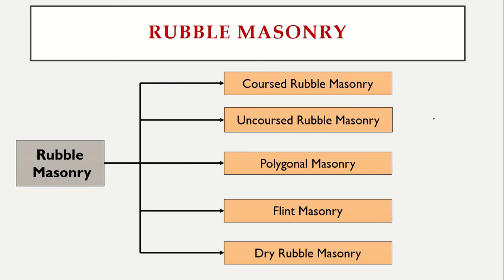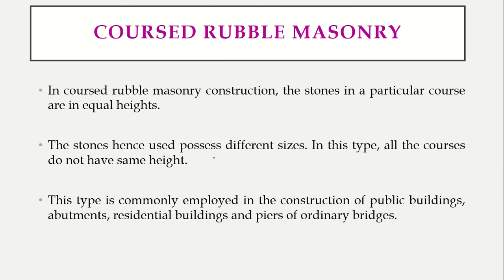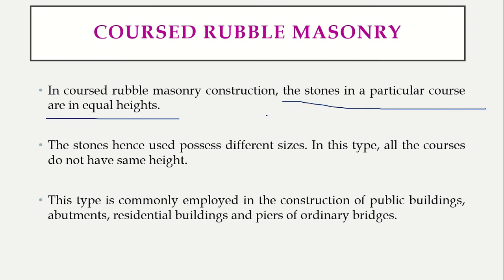Rubble masonry is further classified into five types: coursed, uncoursed, polygonal, flint, and dry rubble masonry. First is coursed rubble masonry, where the stones in a particular course are of equal heights. A course is the horizontal layer of elements — whether bricks or stones. So in one particular layer, if all the stones are around equal height, it is called coursed rubble masonry.